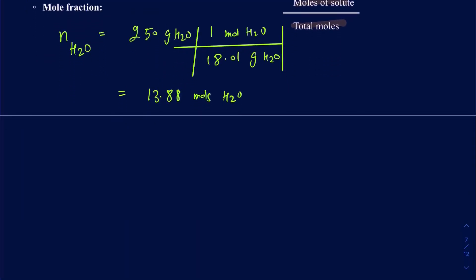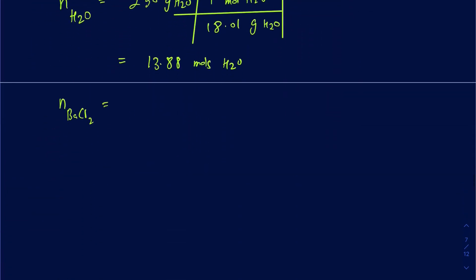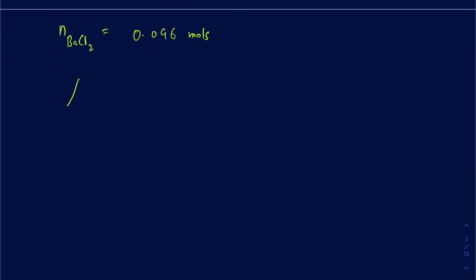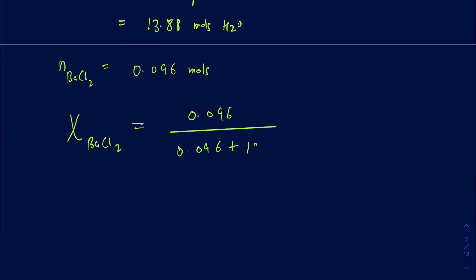Now we know moles for both components. Moles of BaCl₂ were calculated earlier as 0.096. To find the mole fraction of BaCl₂, it's 0.096 divided by (0.096 + 13.88), which gives 0.0069 as the mole fraction of barium chloride.